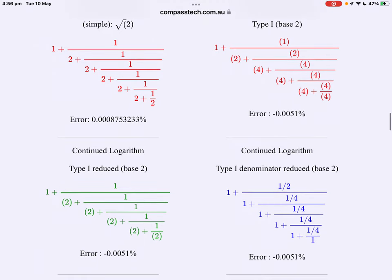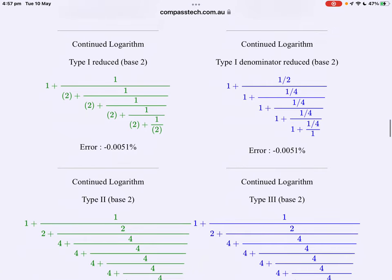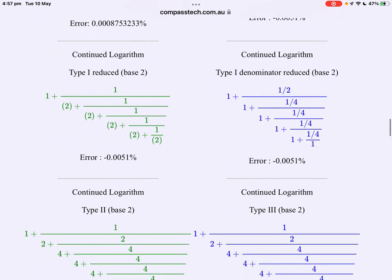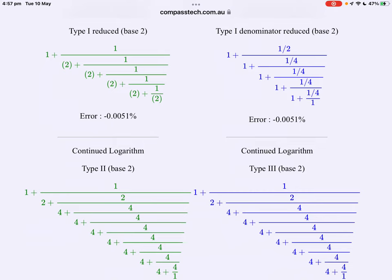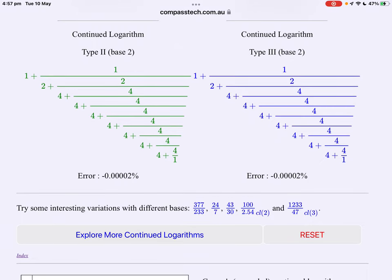But look at their continued logarithm forms. Once again, we see a periodic result for square root 2, 1, 2, and then a string of 4's. The reduced form, not surprisingly, comes out to be the same as the simple continued fraction. Look at the denominator reduced form. Interesting. This is teaching us all sorts of ways that we can manipulate continued fractions to simplify them in various ways. Type 2 and type 3, once again, interesting.